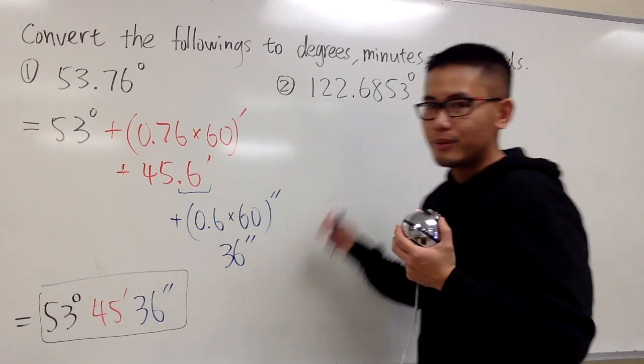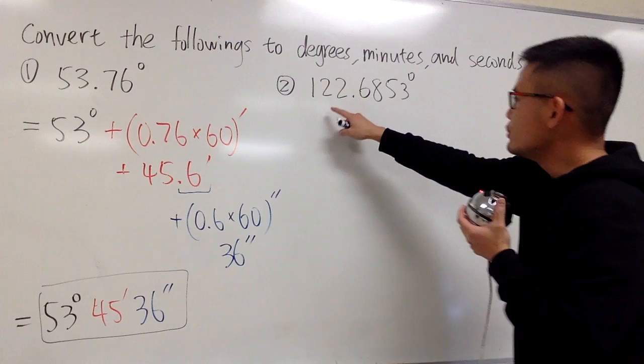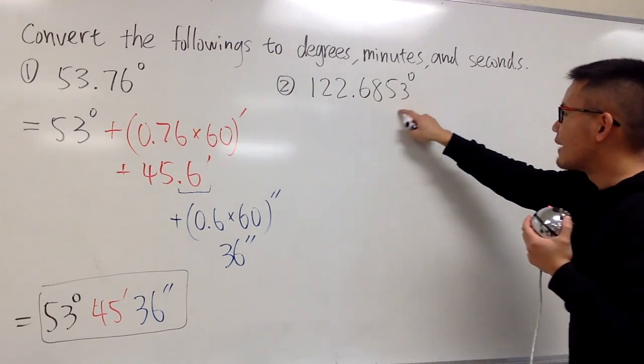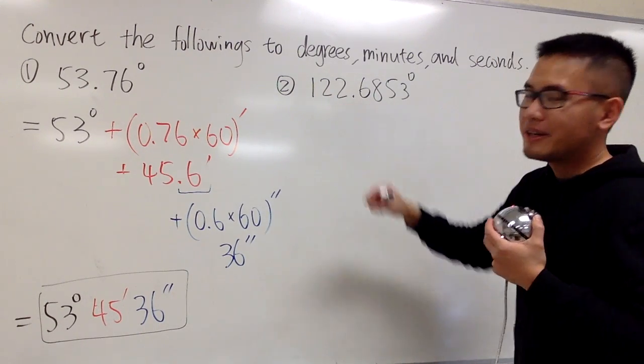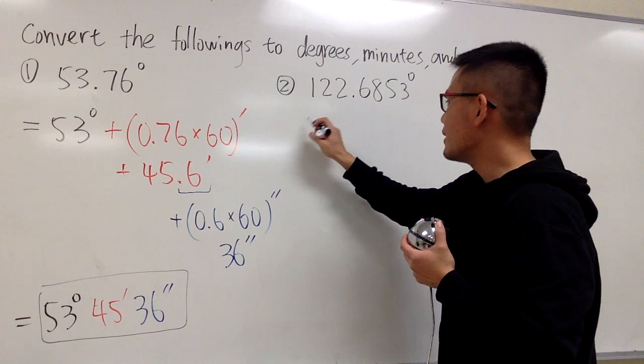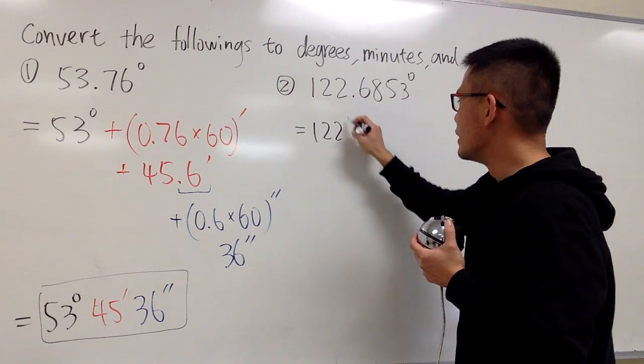Well, let's see another example. 122.6853 degrees. This is degrees already. So let's just go ahead and say this is 122 degrees.